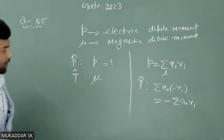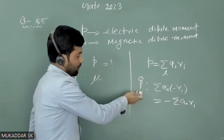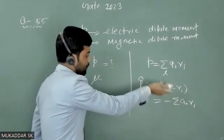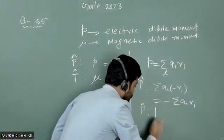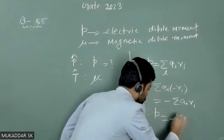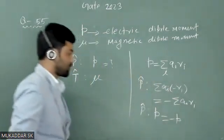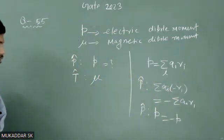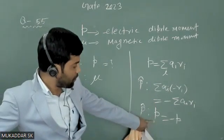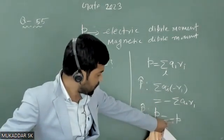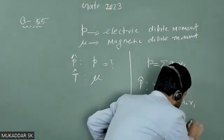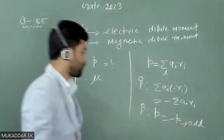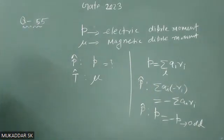So under the action of parity, P becomes minus P, because we get minus Q_i R_i. This means the electric dipole moment changes its sign under parity, and therefore it will show odd parity. The electric dipole moment shows odd parity.